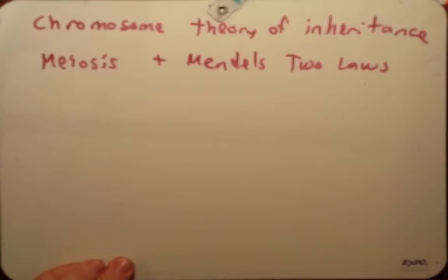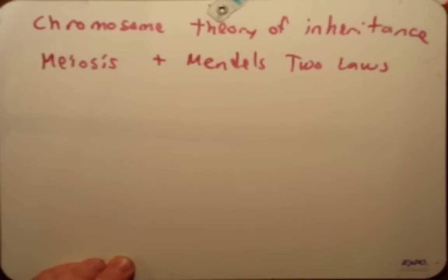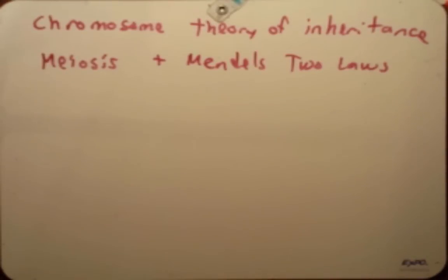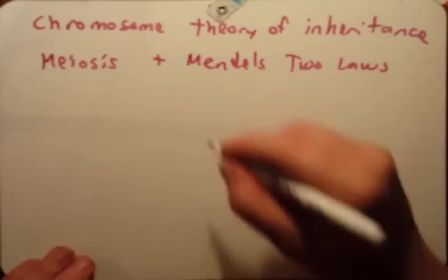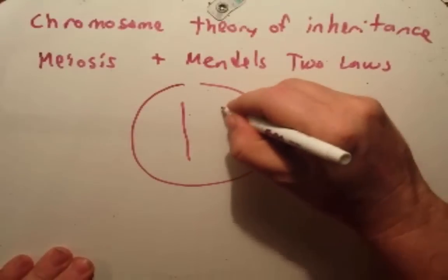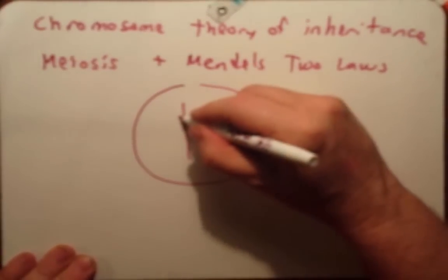Mendel didn't know what a chromosome was, what DNA was, what genes were, or what genetic material was. He just was looking at peas and looking at traits and he was able to make these two laws which have held up very well throughout the past 150 years. But we now know about meiosis, and we can bring these two ideas together, because even though Mendel was looking at traits like round and yellow, we now know it's not just random genes floating around in a cell. We know that these genes within the cell are on chromosomes.